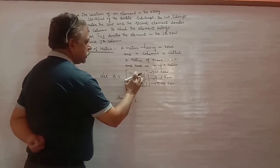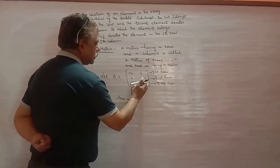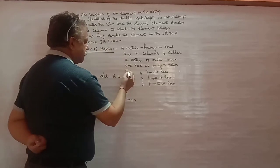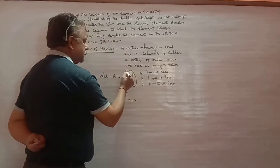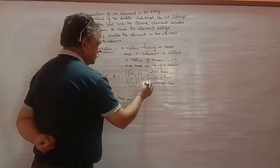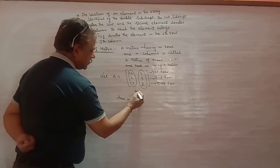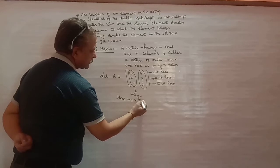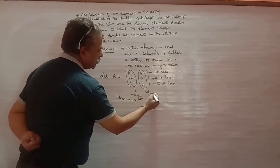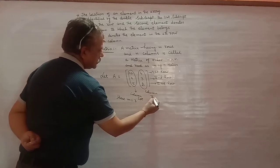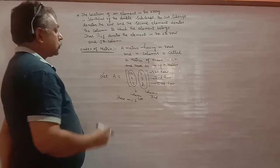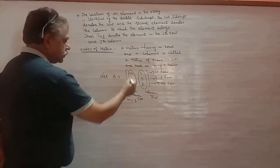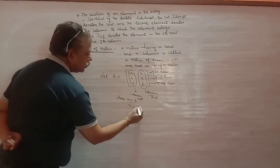अब इस तरीके से vertical direction में देखें। यह हो गया column first, और यह हो गया column second। तो column को हम N से लेते हैं। तो यहां पर N equal to 2.